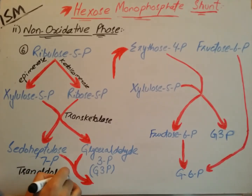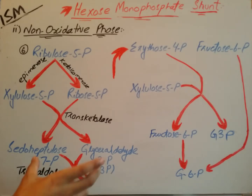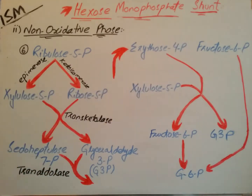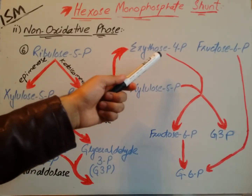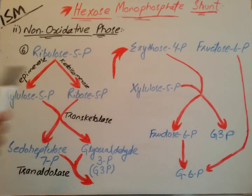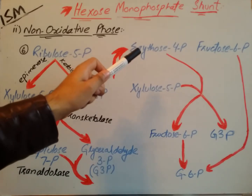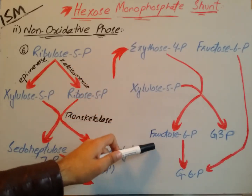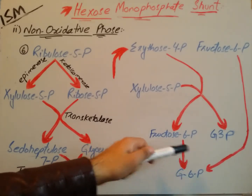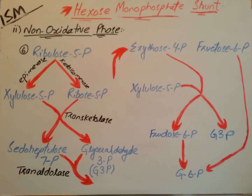Transaldolase converts sedoheptulose-7-phosphate and glyceraldehyde-3-phosphate into erythrose-4-phosphate and fructose-6-phosphate. The erythrose-4-phosphate then reacts with xylulose-5-phosphate, an initial product of this pathway, and together they react to form fructose-6-phosphate and glyceraldehyde-3-phosphate.